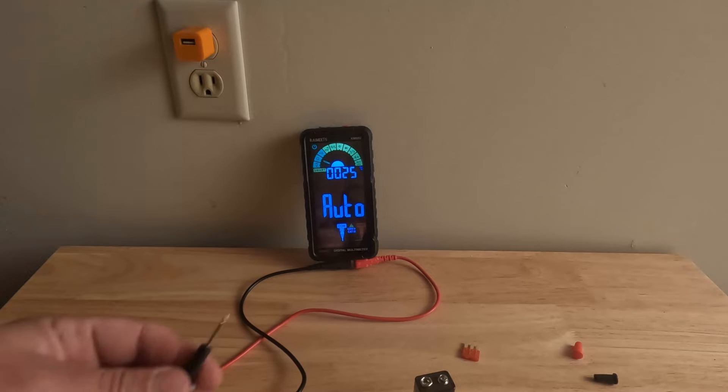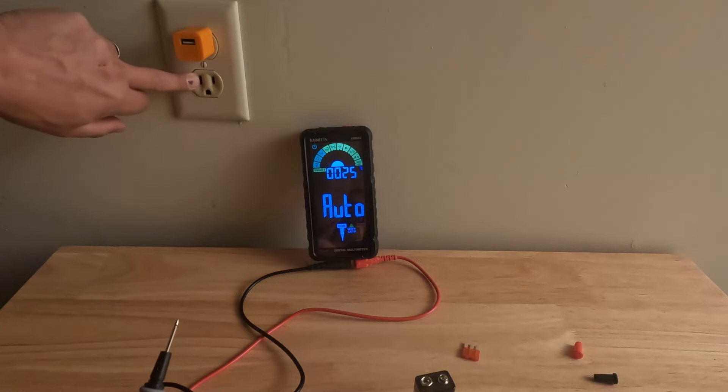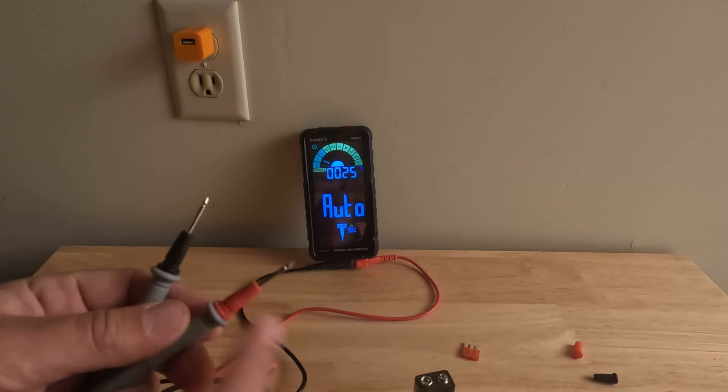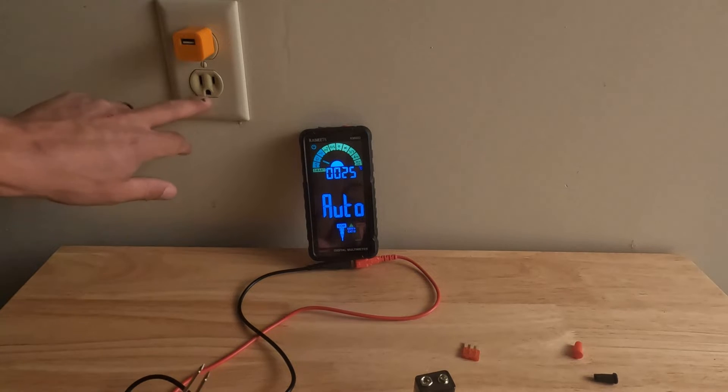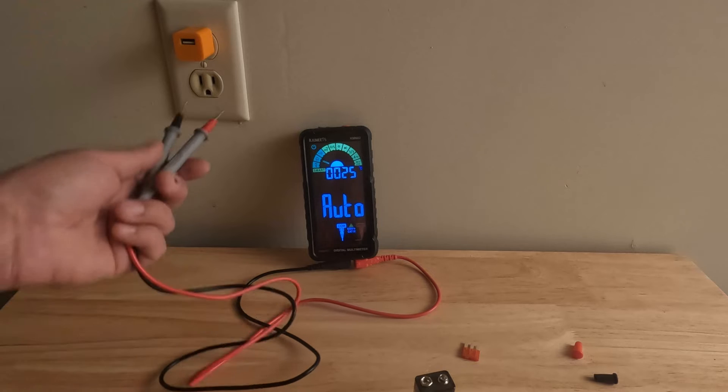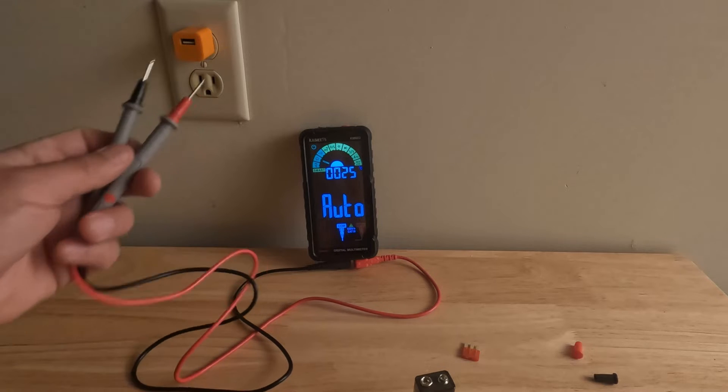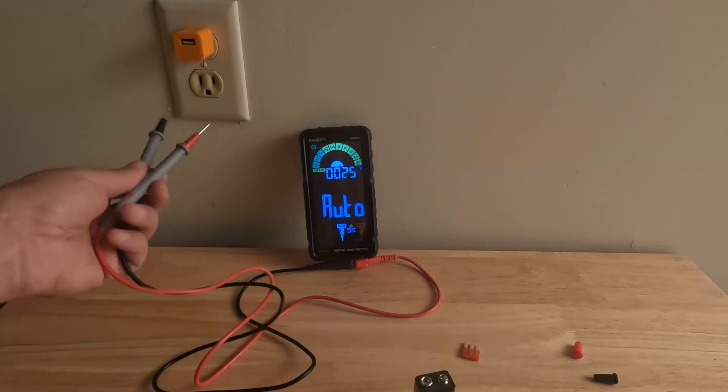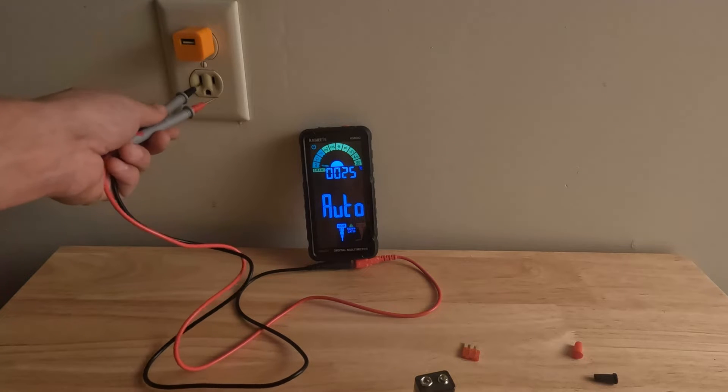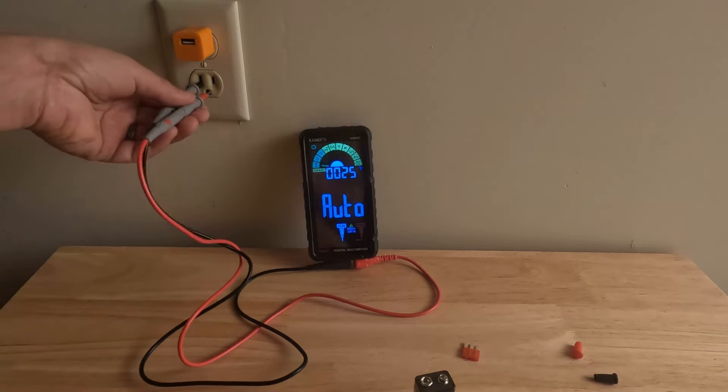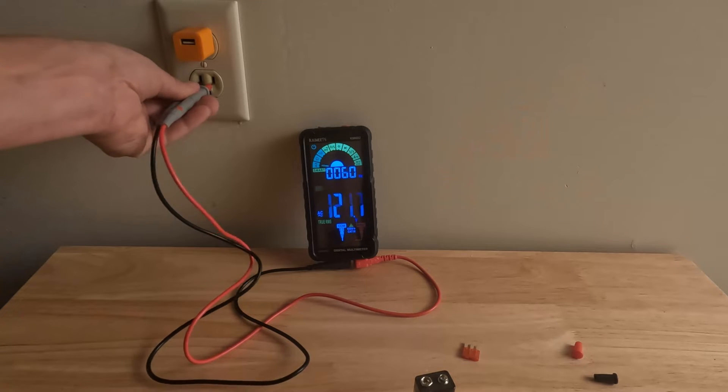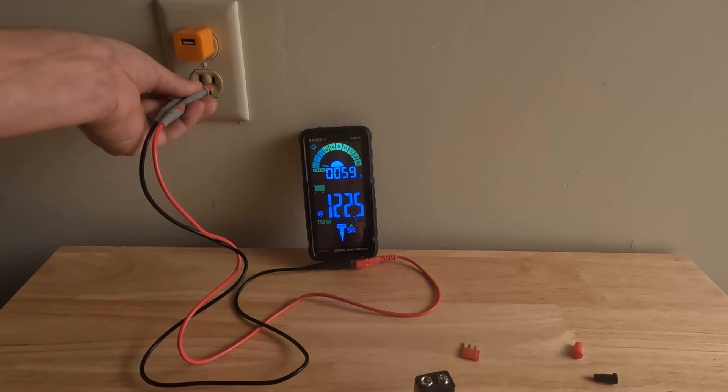We're going to stick the black probe into the neutral, which is the left. We're going to stick our red probe into the hot, which is the right. The bottom is the ground, we'll just leave that alone. When we test an outlet, you want to stick the black in first. You never want to put the red in and then with the same hand put the red one in. You can see here we're reading 122.4 volts.